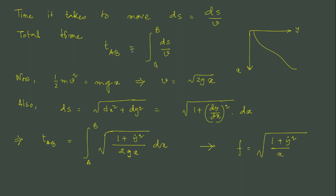Total time from a to b is t_ab, which is just integration a to b ds by v. But for this problem, half m v square is equal to m g x and v is then root over 2 g x.